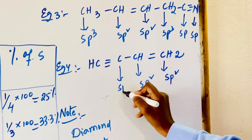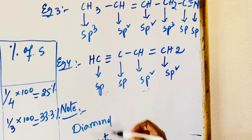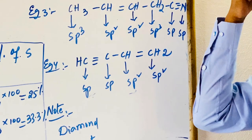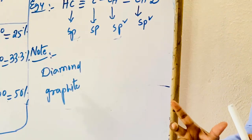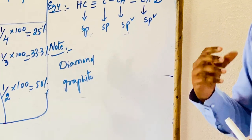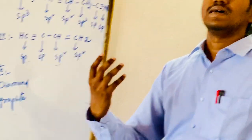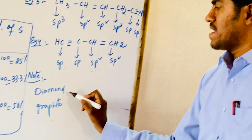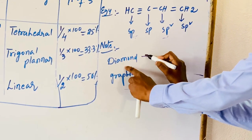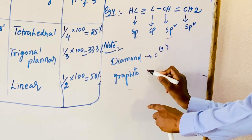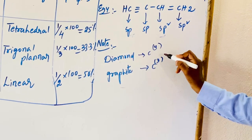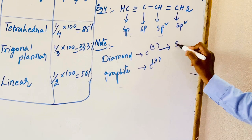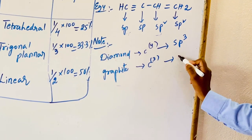Diamond and graphite are the two allotropic forms of carbon. Allotropy means an element exists in different forms with the same physical but different chemical properties. In diamond, carbon has valency 4, so hybridization is sp3. In graphite, carbon has valency 3, so hybridization is sp2.